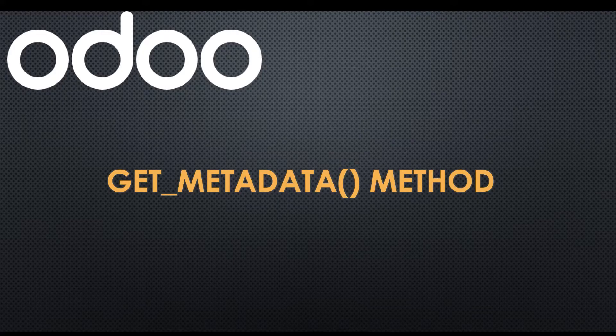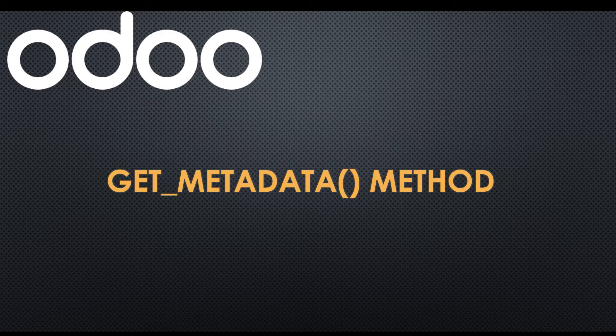In this discussion you can see how to use the get_metadata method and what is the purpose of this method. In case you missed the previous discussion about how to use the ensure_one method, please check the link given in the description. First we need to understand why this method is useful in Odoo, what is the purpose, and how to get data.